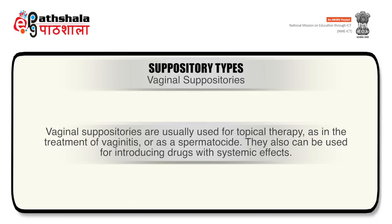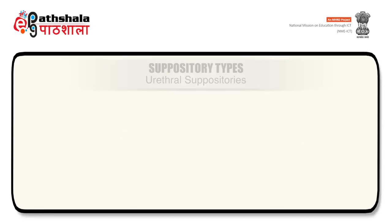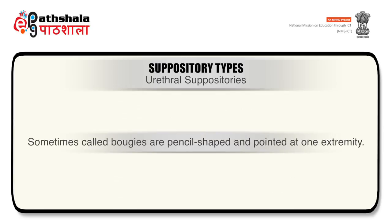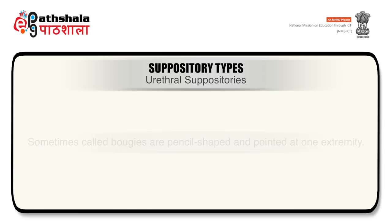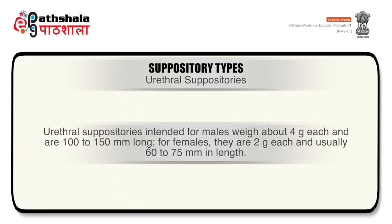Vaginal suppositories are usually used for topical therapy, as in the treatment of vaginitis or as a spermicide. They can also be used for introducing drugs with systemic effects. Urethral suppositories, sometimes called bougies, are pencil shaped and pointed at one extremity. Those intended for males weigh about 4 grams each and are 100 to 150 millimeters long; for females they are 2 grams each and usually 60 to 75 millimeters in length.